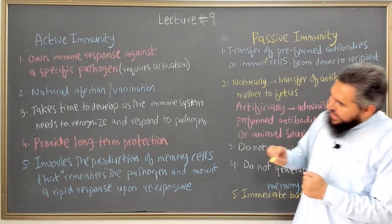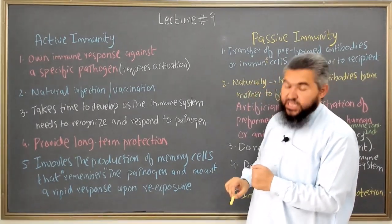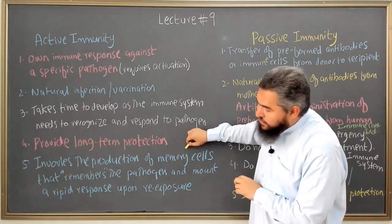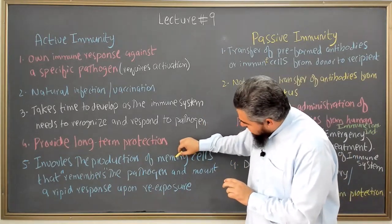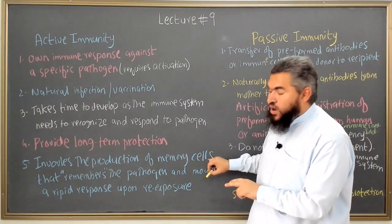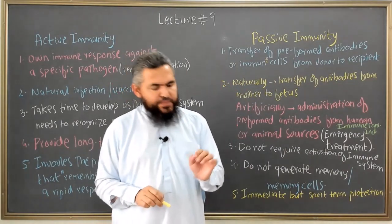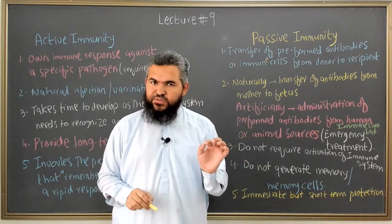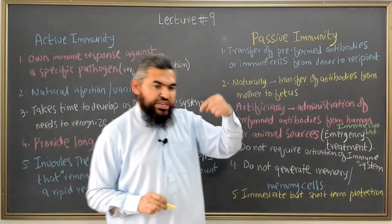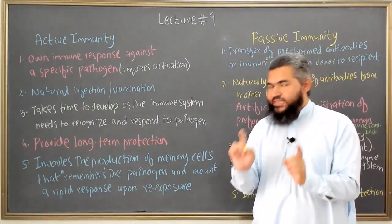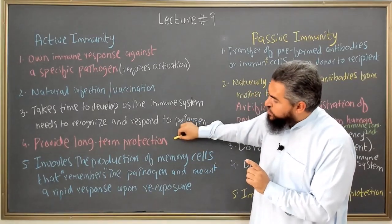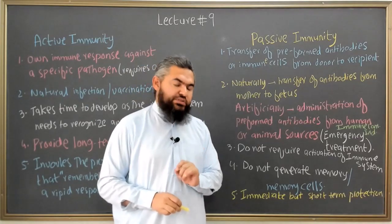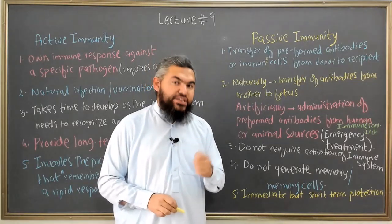The most important thing about active immunity is that it provides long-term protection against a particular pathogen. The reason for this long-term protection is that active immunity involves the production of memory cells. These memory cells remember the particular pathogen and mount a rapid response upon re-exposure. When your body is exposed to a pathogen for the first time, the immune system recognizes and responds to it, and then makes a memory of that pathogen for rapid future response. I'll have a detailed discussion on memory cell formation when we discuss antibody production by B cells.